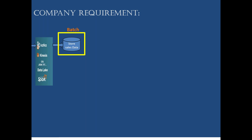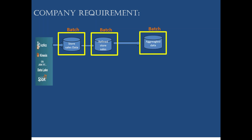As part of the batch process, we first store the entire sales data, then apply some data quality checks — like duplicates, nulls, etc. Once quality checks are done, we create an aggregated layer — meaning sales by week, by month, by day. Once aggregated, we create reports on top of it. This is one kind of process happening in organization X.